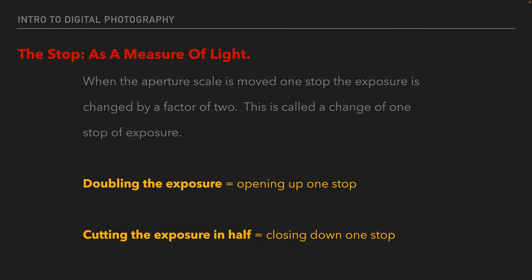When we talk about exposure, we talk about things as a stop of light. It's a measure of light that we use and we will talk about this all the time in class. The stops of light in each of the components — shutter speed, aperture, and ISO — are all equal to each other. When the aperture scale, shutter speed scale, or ISO scale is moved one stop, the exposure is changed by a factor of two. When we say to open up a stop, we mean to increase exposure by a factor of two — double the exposure. Closing down a stop means cutting the exposure in half. The math is times two or divided by two.